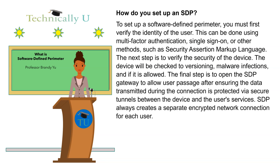How do you set up a software-defined perimeter, SDP? To set up a software-defined perimeter, you must first verify the identity of the user. This can be done using multi-factor authentication (MFA), single sign-on (SSO), or other methods, such as Security Assertion Markup Language (SAML).